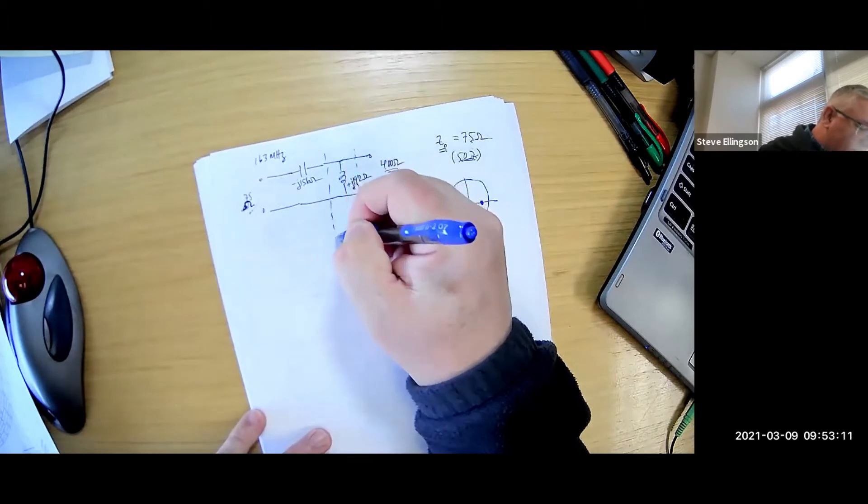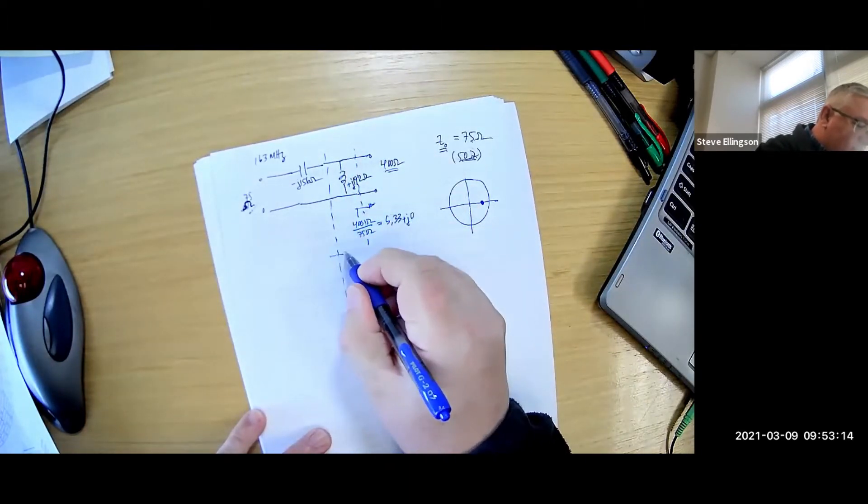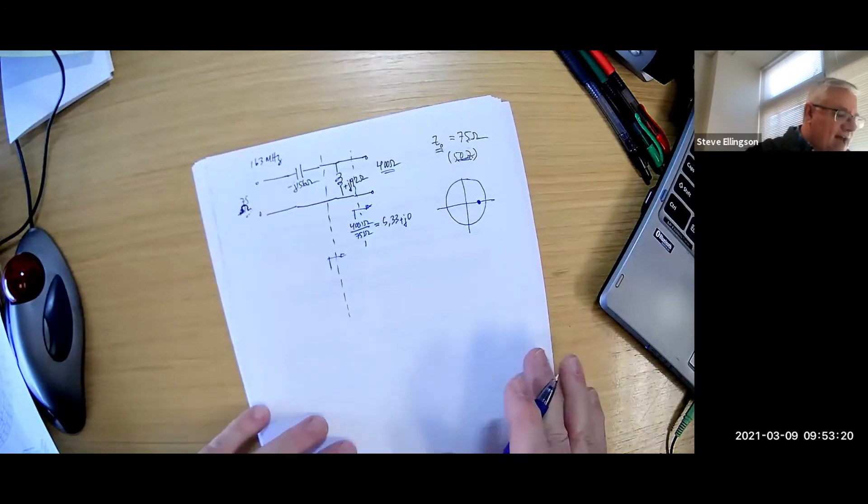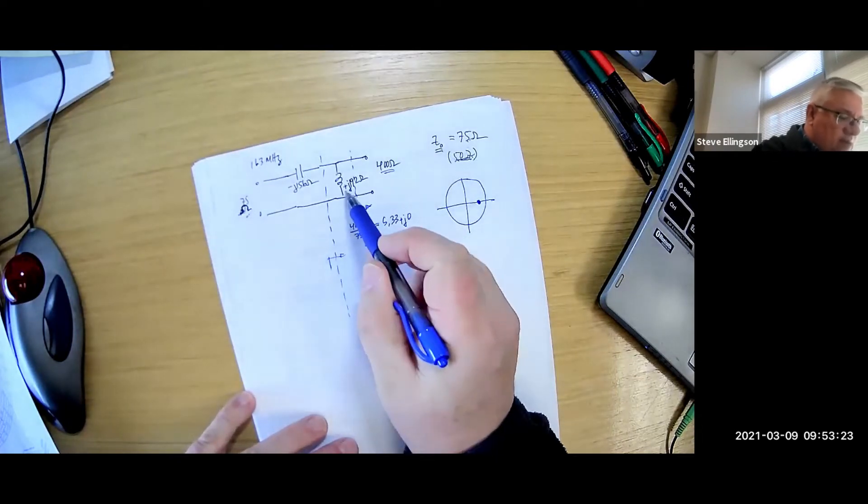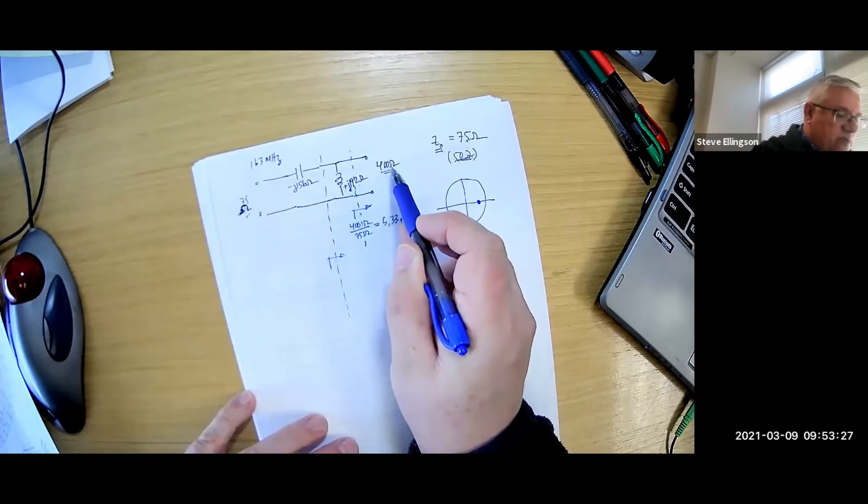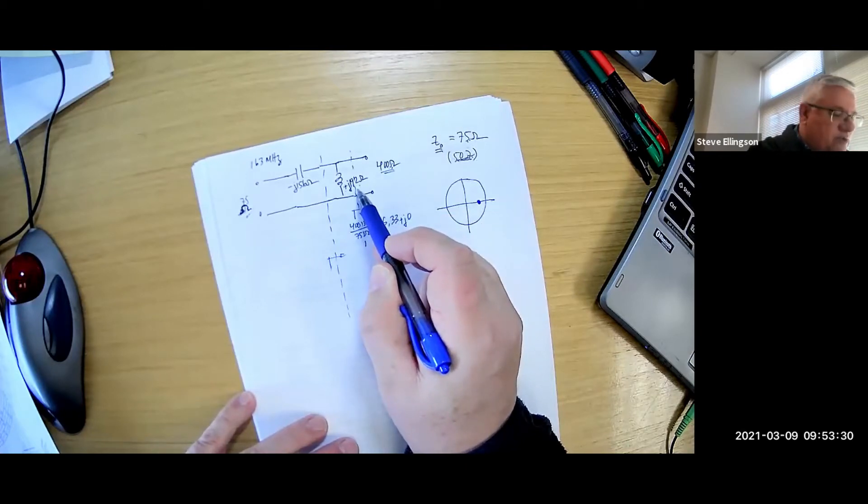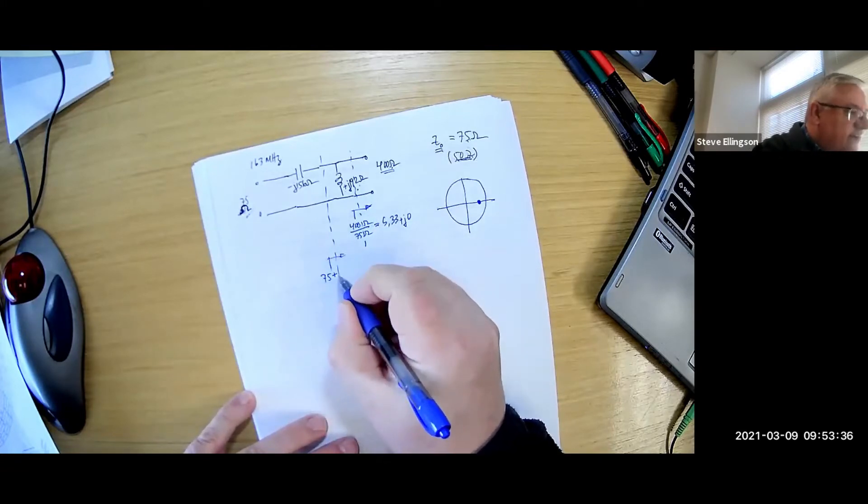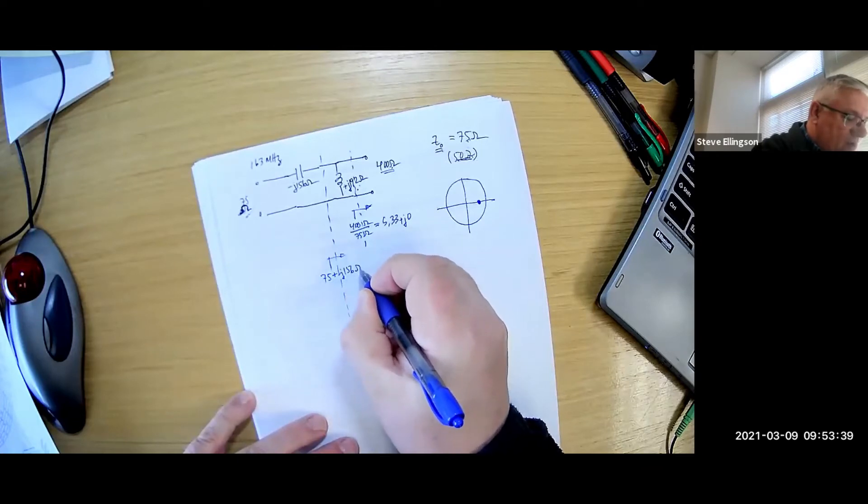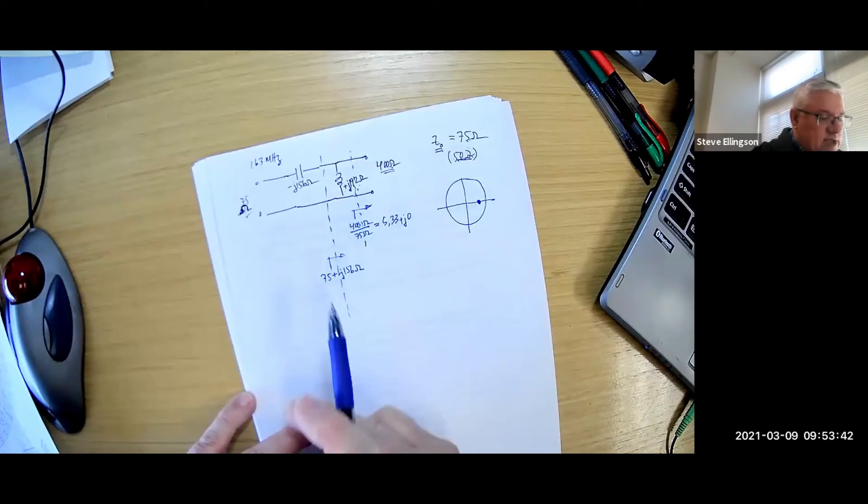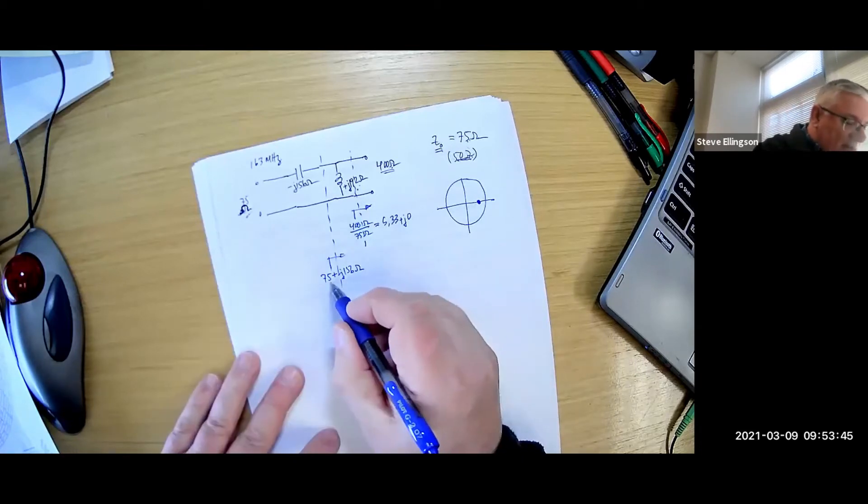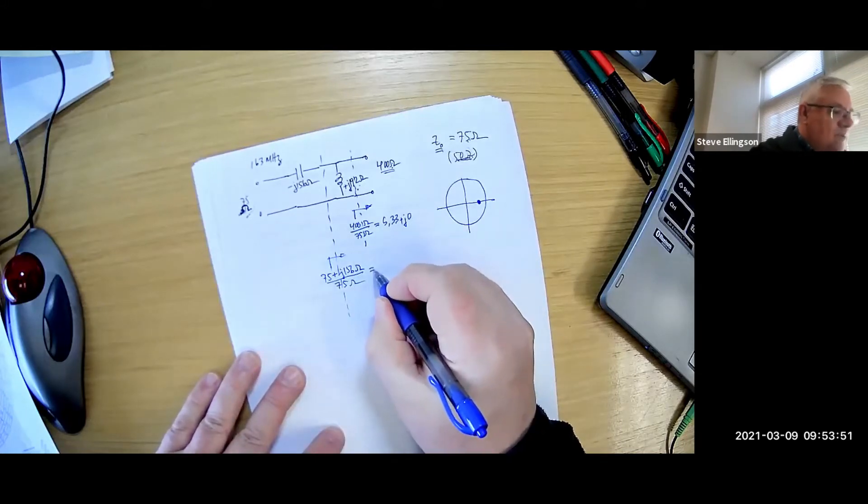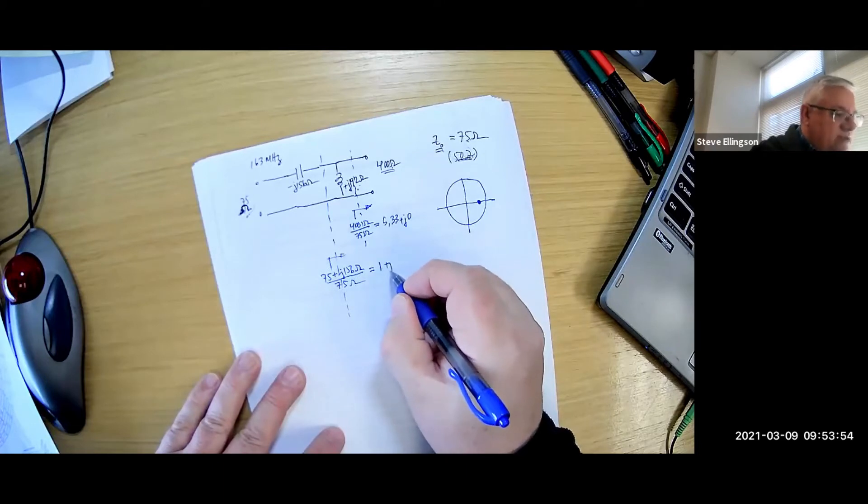We can go one step here to the left and we could ask ourselves what this point would look like on the Smith chart. Now what do we have here? We have the parallel combination of these two things. This is 400 ohms in parallel with j192 ohms. I presume you can work that out by yourself and find that this is 75 ohms plus j156 ohms. That's the actual impedance looking to the right there. The normalized impedance of course is this divided by 75 ohms.